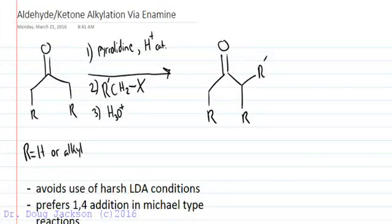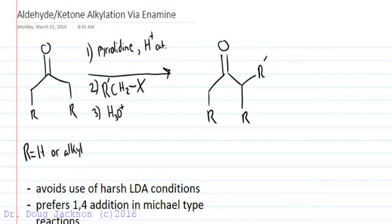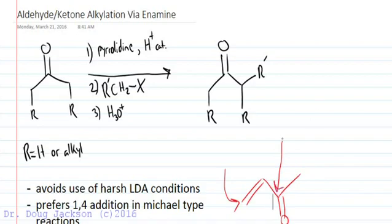Let's talk about alkylation of aldehydes and ketones via an enamine intermediate. The advantage is we avoid the use of harsh LDA conditions — a pKa of about 35 makes it a very damaging reagent to many base-sensitive compounds. LDA is also pyrophoric when making and using it, so it can catch fire. We can use an enamine to avoid these conditions and also get a reagent that prefers a 1,4-Michael type addition rather than 1,2, because it's a softer and bulkier nucleophile going to the more accessible position.